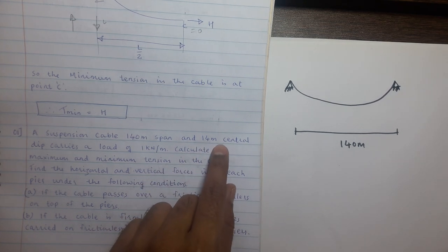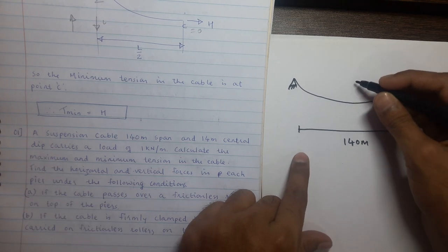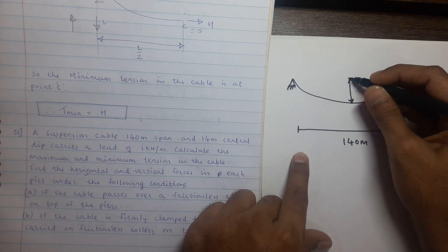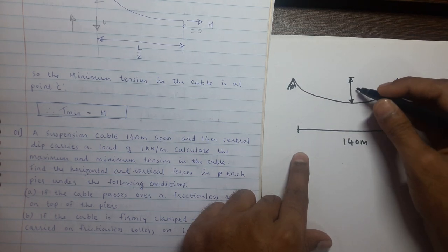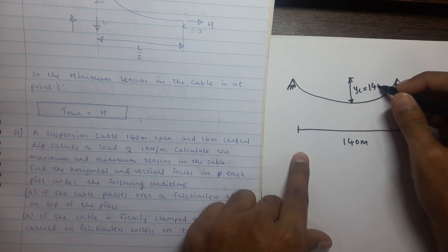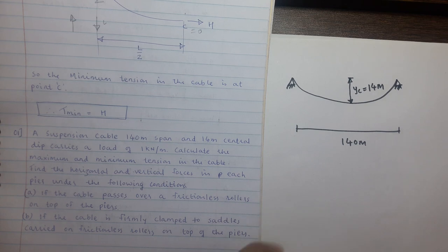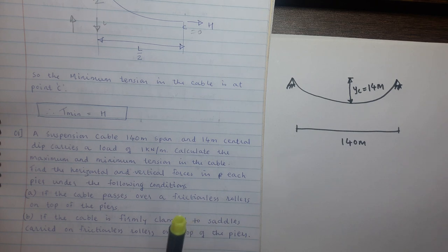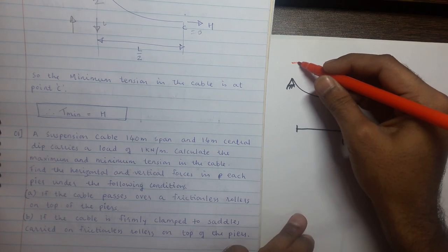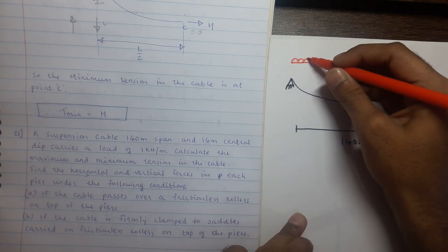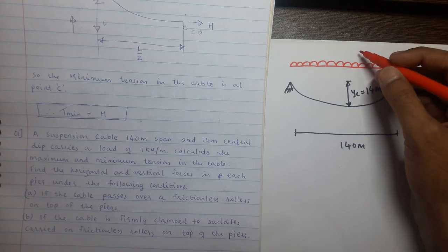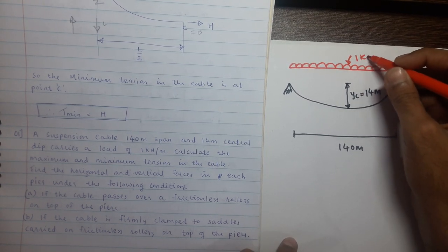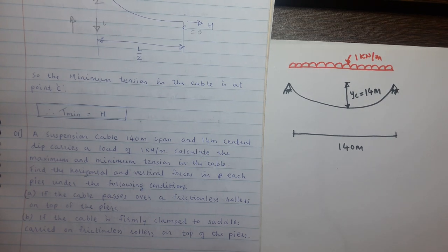The central dip is the distance of the lowest point of the cable from support level, so yc is given as yc equal to 14 meters. The cable carries a UDL of 1 kilonewton per meter over the entire span.